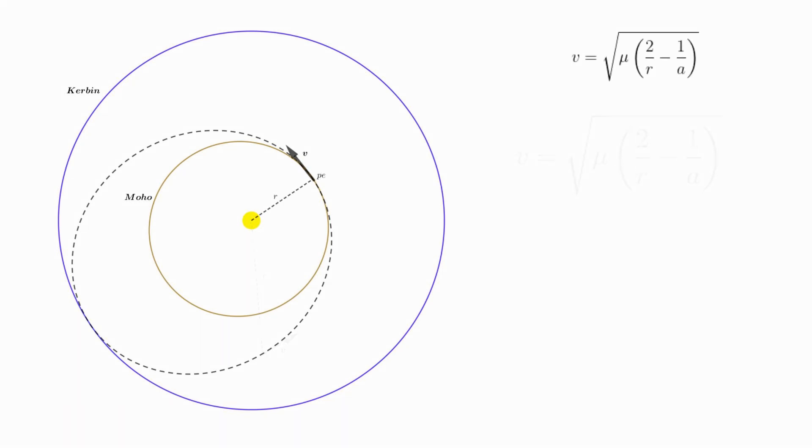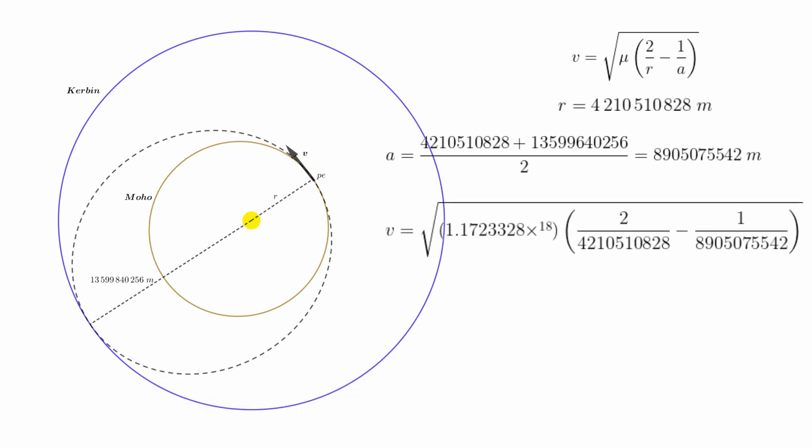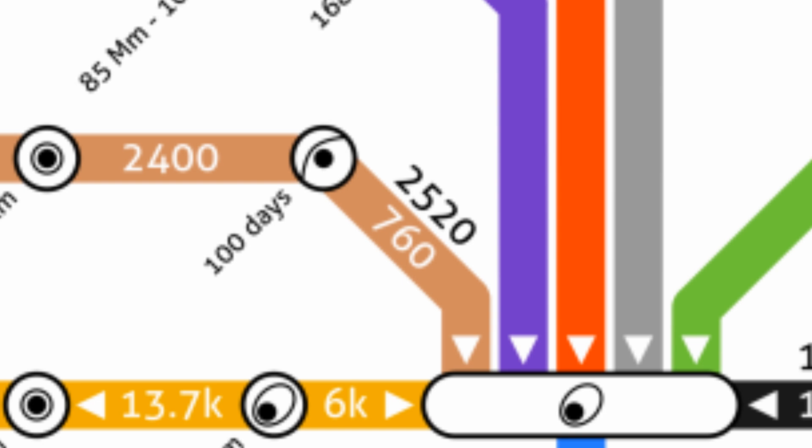So now we can quickly calculate our speed at periapsis. Our transfer orbit has an apoapsis equal to Kerbin's orbital radius of about 13.6 million kilometers, and a periapsis at Moho's periapsis of 4.2 million kilometers. This gets a semi-major axis of about 8.9 million. Substituting in and using the standard gravitational parameter for the sun gets a velocity of 20,621 meters per second, which, when substituted into our inclination change formula, yields a delta-V cost for the inclination change of 2,518 meters per second, matching the delta-V map when we round to the nearest ten. But as I implied earlier, if this were the situation, you can do much better.